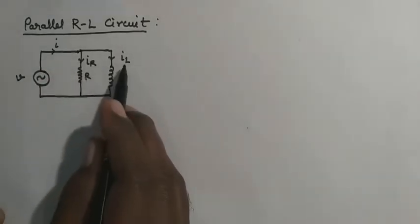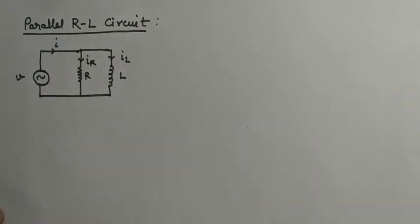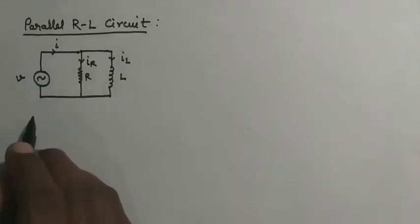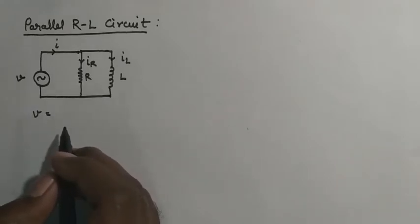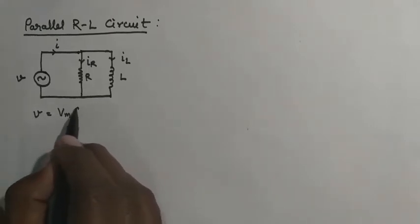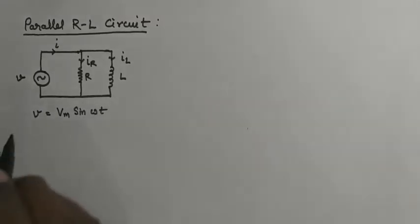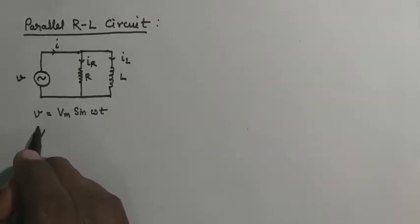In this circuit, voltage is common for all the elements whereas the current will be individual. If the current in the resistance is IR and the current in the inductor is IL, then the total circuit current I will be equal to the sum of IR and IL. Here we can take voltage as our reference phasor. Previously in series circuits we took current as our reference phasor because current was common, but in this circuit voltage is common for all elements.